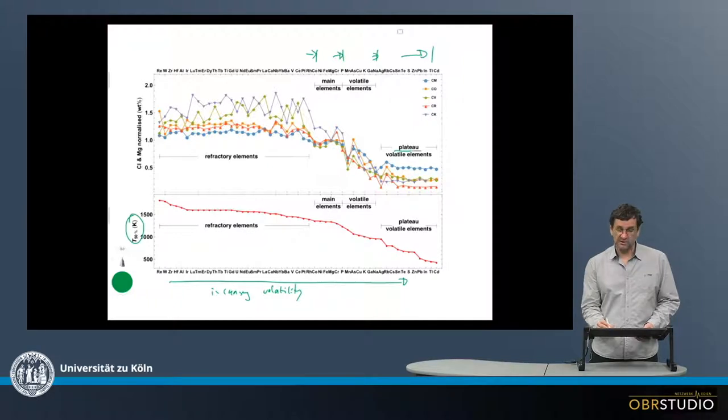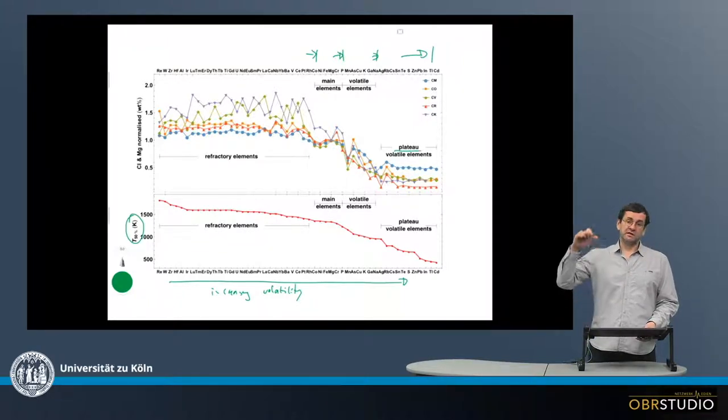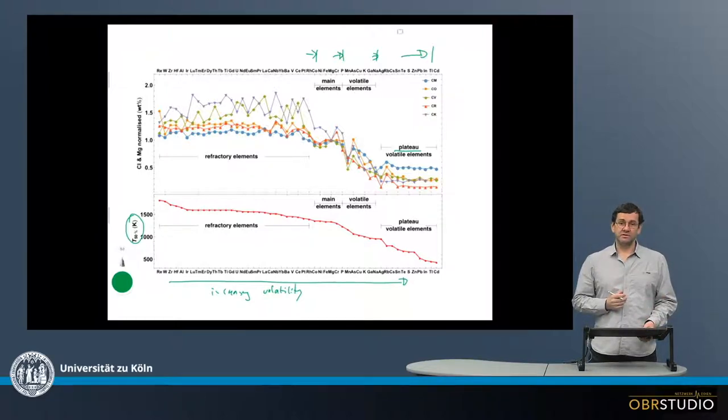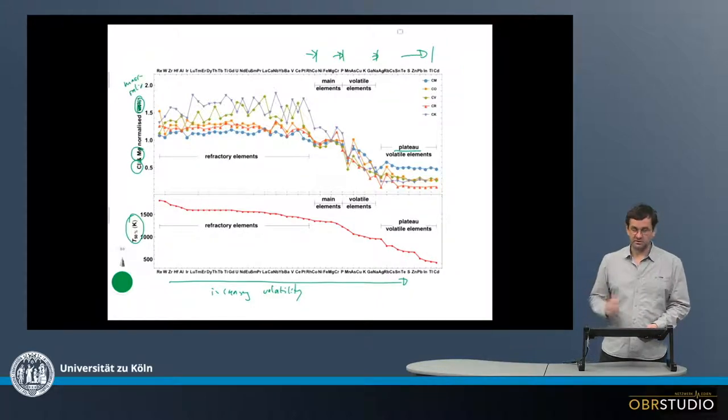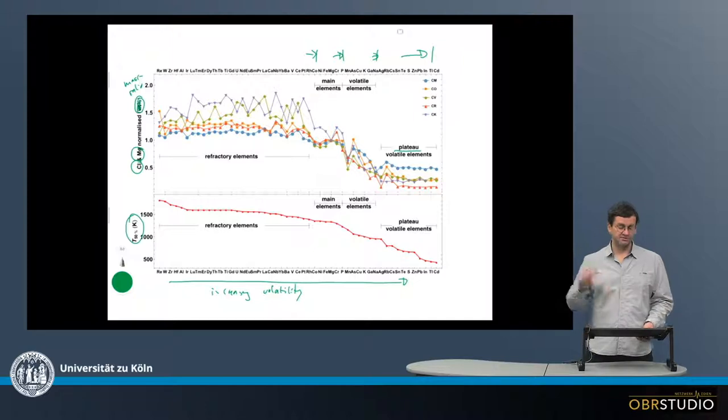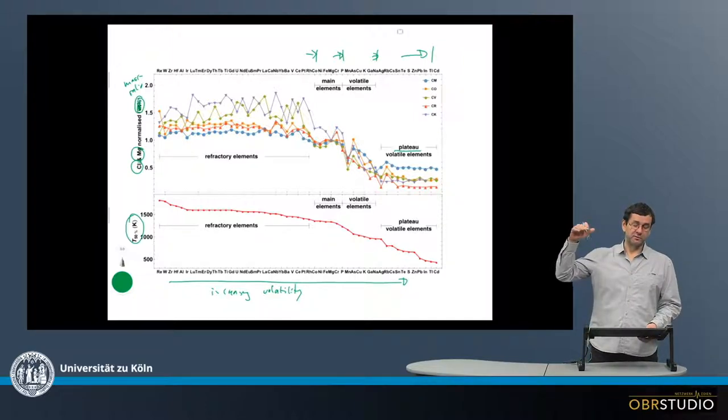Now these are also called here the plateau elements. And I'll come back to this in a minute. In the upper plot, there is the element concentrations in the various chondrites, normalized to CI and to magnesium. And here the concentration in weight percent is used. But because it's normalized, this should be a mass ratio actually. Then this would be the correct designation. The scale is linear on the y-axis.